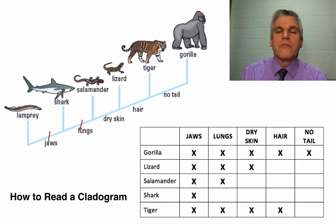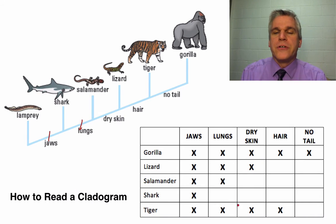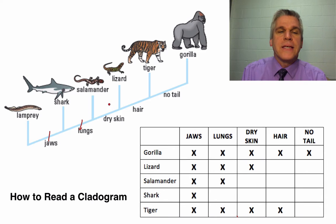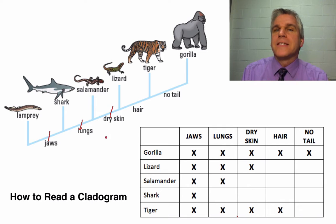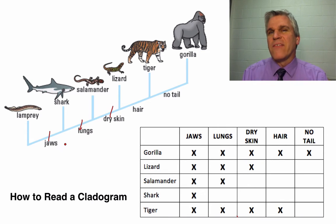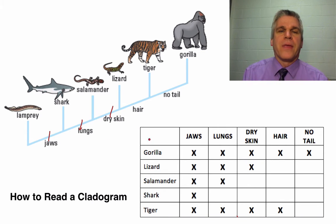Then we go to the dry skin. The gorilla, lizard, and tiger have dry skin. That separates the salamander from that group because salamanders have to have moist skin — that's how they breathe.